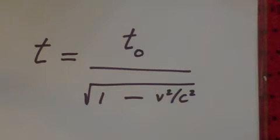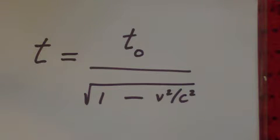To derive the mass variation with velocity equation, we start with the time dilation equation from special relativity.